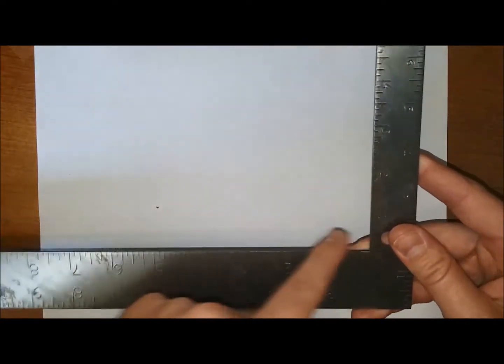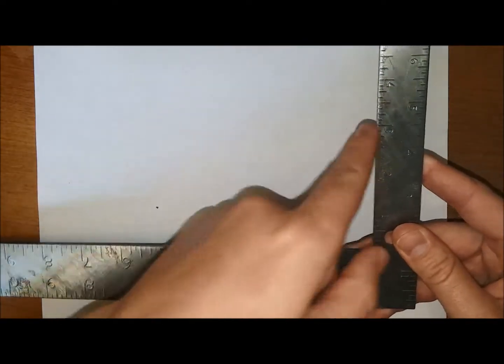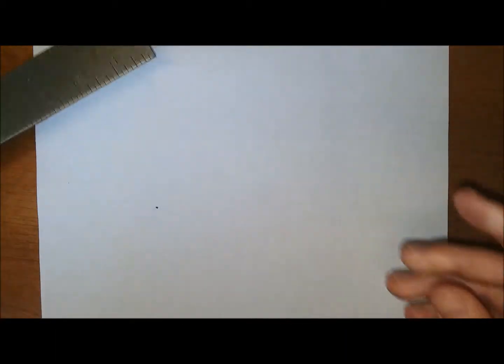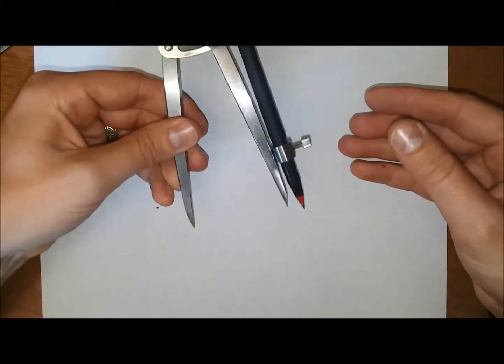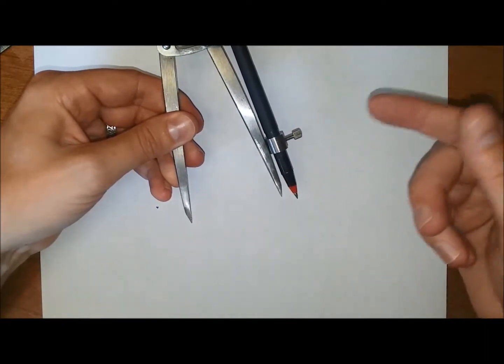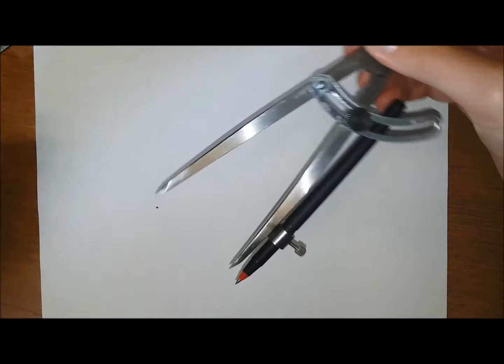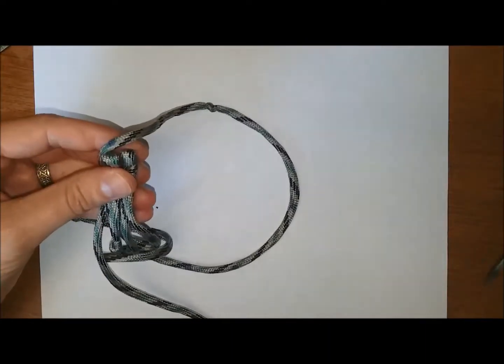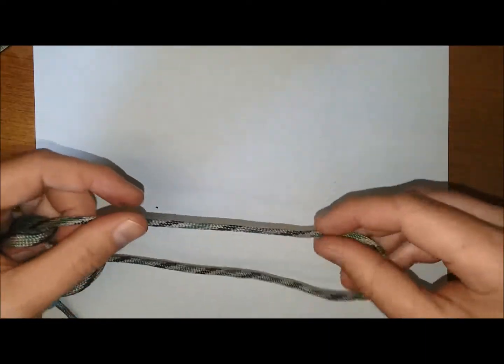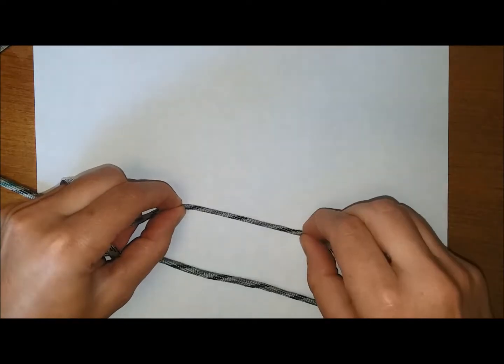To do this we're going to use two tools. One is what's called a square. All this is is a right angle - we're not going to use any of the measurements, just the right angle to get straight lines and right angles. The other thing we're going to use is called a divider which you use to draw circles basically. If you don't have one of these you can also use string to do the same basic thing. The divider is a bit more accurate.